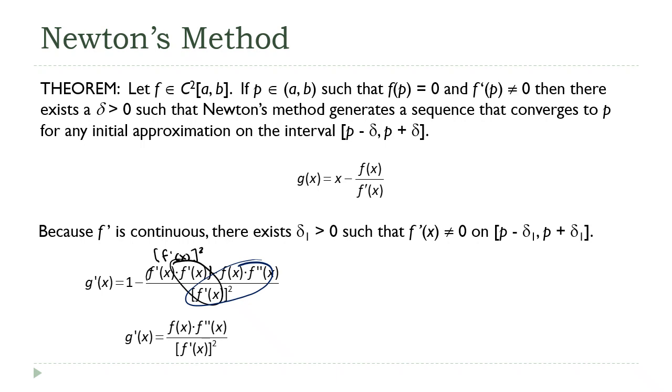So now I want to take this g' function and I want to evaluate it at p. So if I do that, I get this expression and this is equal to zero. Because remember, one of our initial assumptions up here was that f(p) is equal to zero, which means this factor is equal to zero. So the whole thing must be equal to zero.